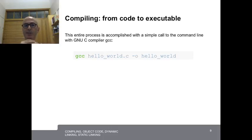The C compiler called gcc allows us to go directly from our C code, in this case hello-world.c, to the final executable hello-world. So all intermediate steps we have been talking about are actually hidden.